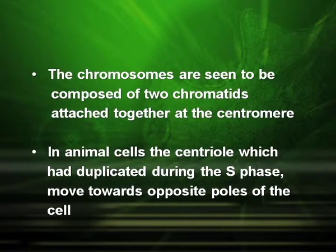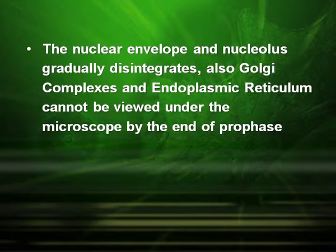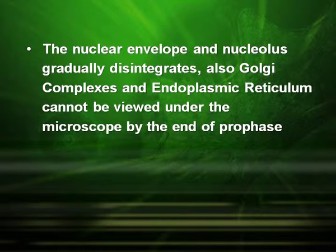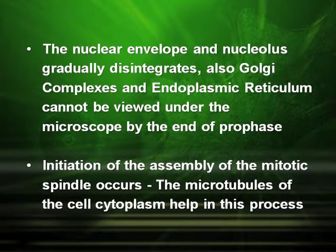The chromosomes are visible and they are composed of two chromatids attached together at the centromere. In animal cells, the centriole which had duplicated during the S phase moves towards opposite poles of the cell. The nuclear envelope and nucleolus gradually disintegrate. Also, the Golgi complex and endoplasmic reticulum can no longer be viewed under the microscope by the end of prophase. Initiation of the assembly of the mitotic spindle occurs, and the microtubules of the cell cytoplasm help in this process.